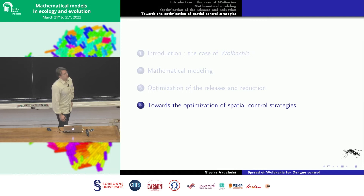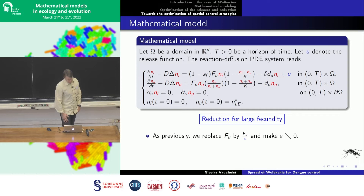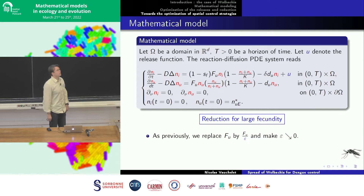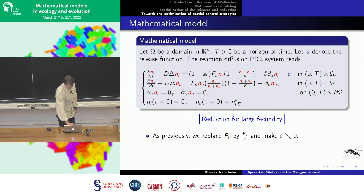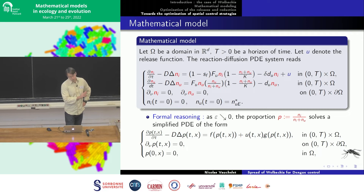Now the second question is optimization in space — where to make the release. We take the same problem but incorporate spatial variation with diffusion. We add a Laplacian to the equations with a diffusion coefficient and Neumann boundary conditions. Using the same large-fecundity approach (ε → 0), we can prove that the competitive reaction-diffusion system reduces to a scalar equation: ∂_t p − Δp = f(p) + u·g(p), exactly the same as before but now with a Laplacian.